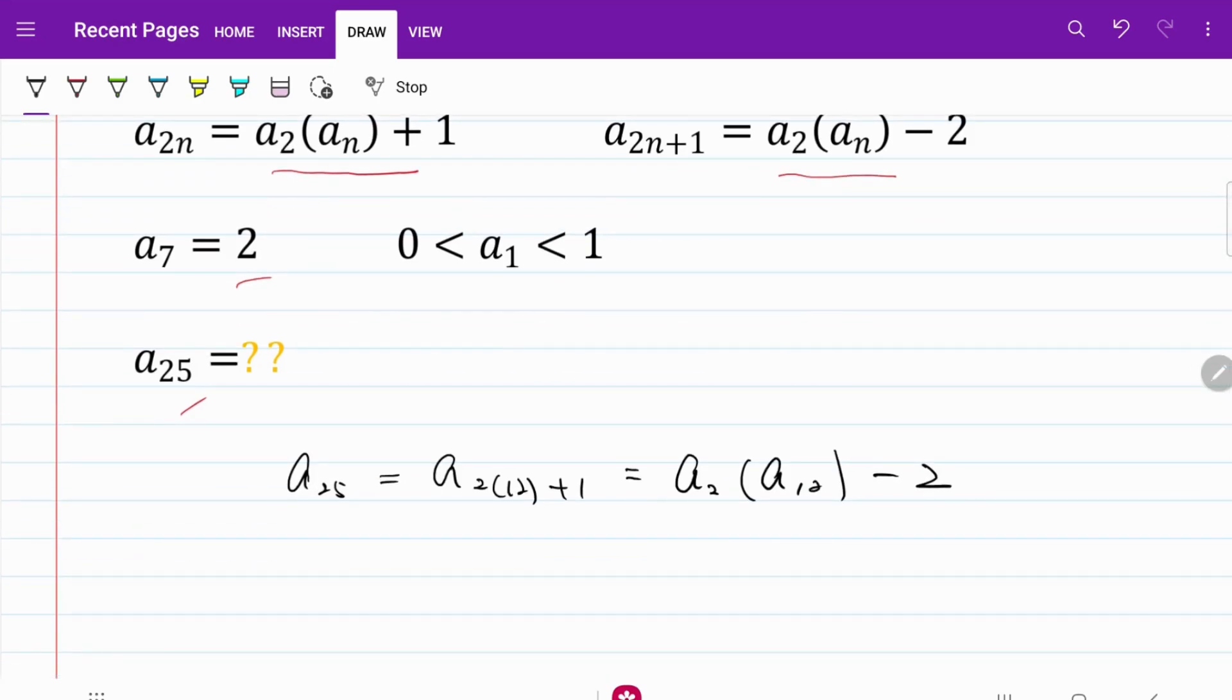Let's continue on. Now I'm trying to deconstruct A12 using the first formula. I'm going to write A12 as A2(6), and that's equivalent to A2 multiplied by A6 + 1. Continuing on, I now have A6 to be equal to A2(3), which is equal to A2 multiplied by A3 + 1.